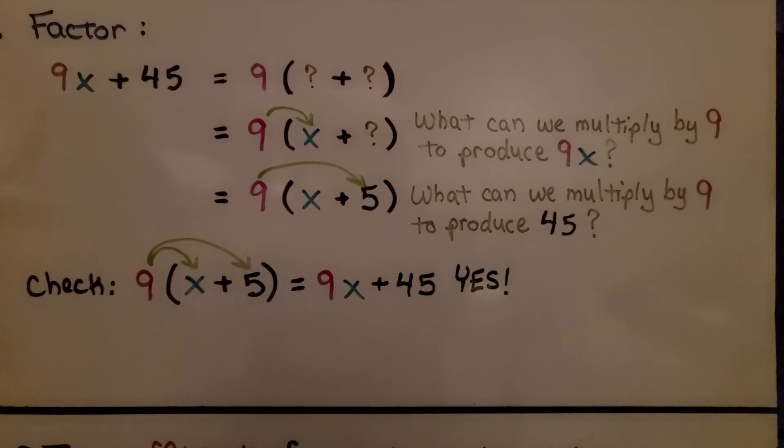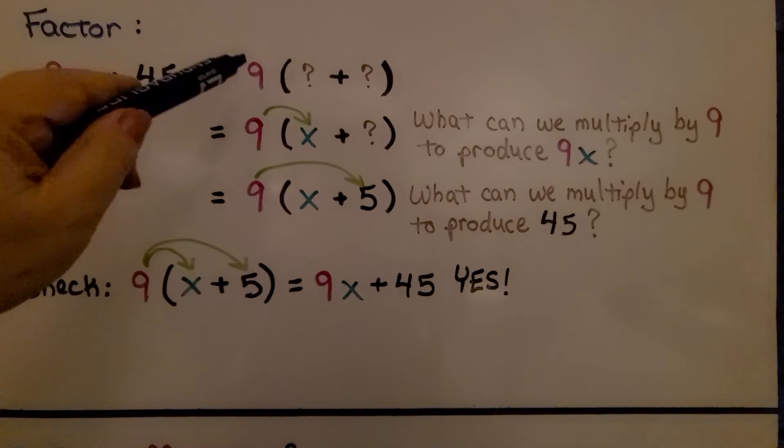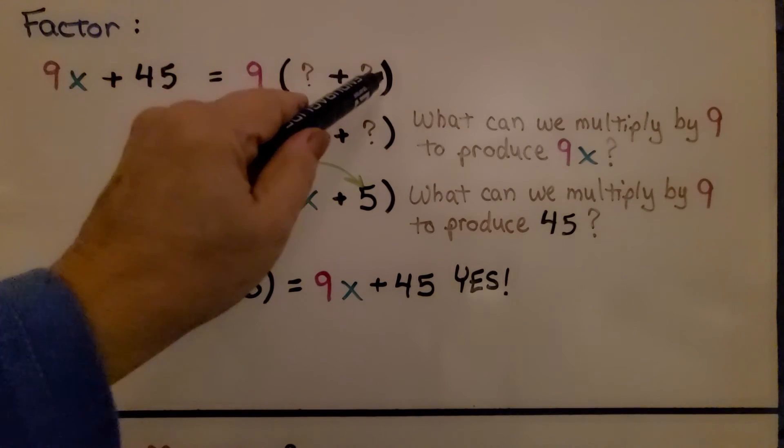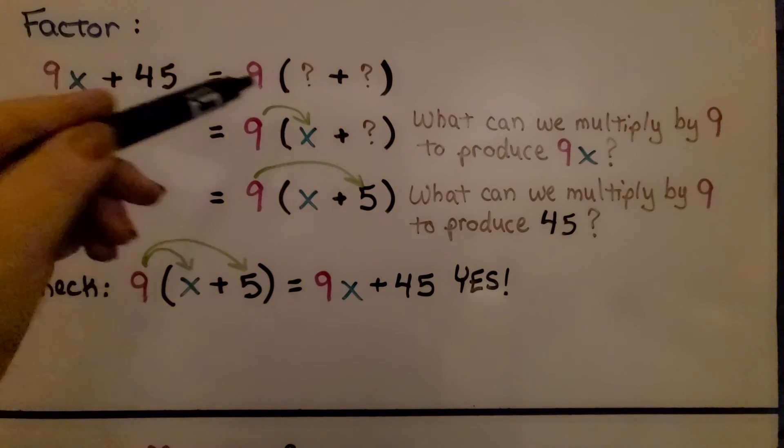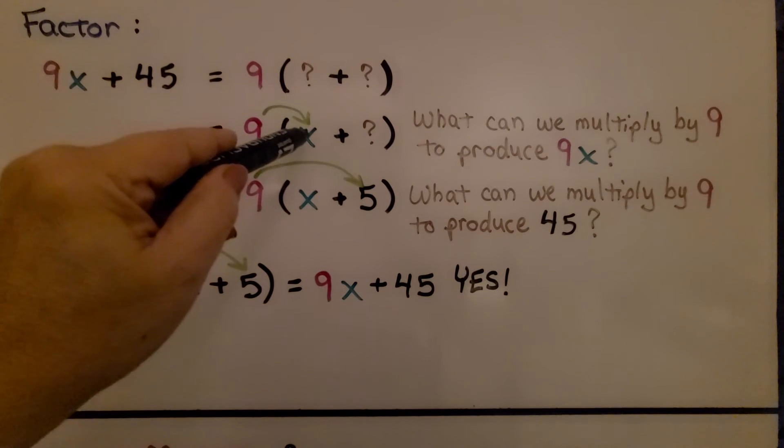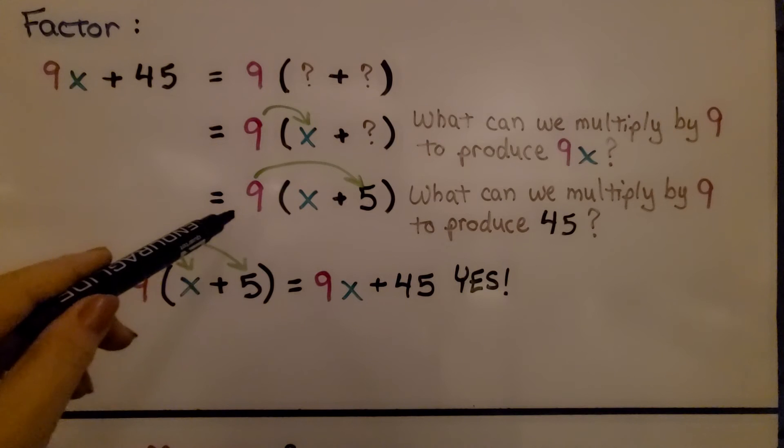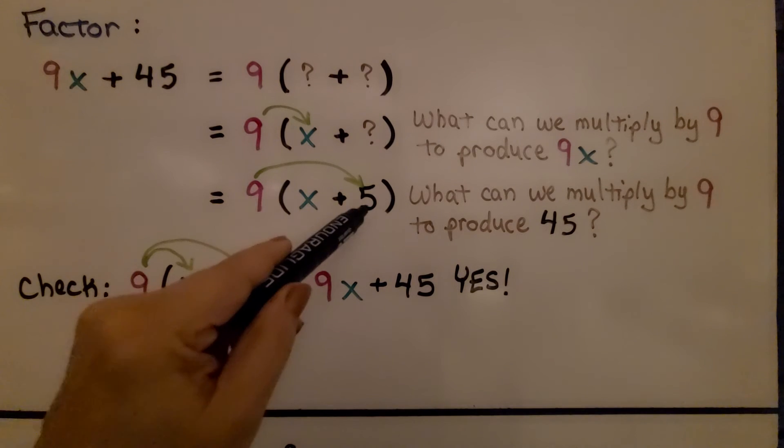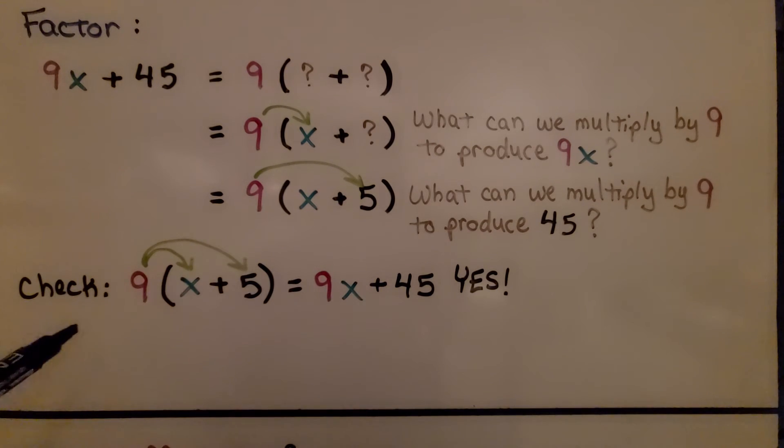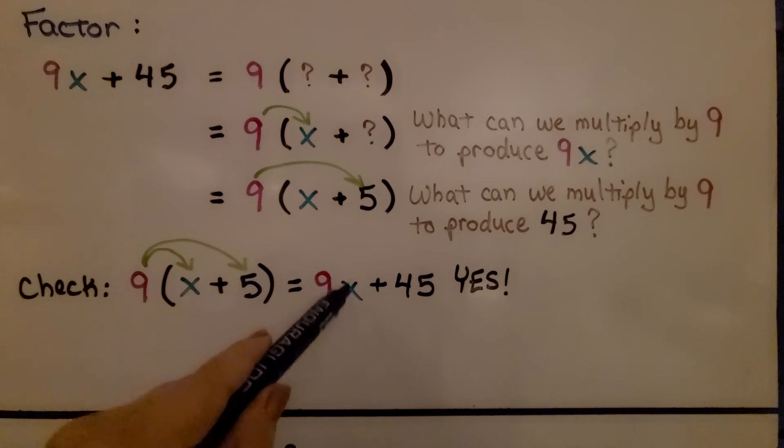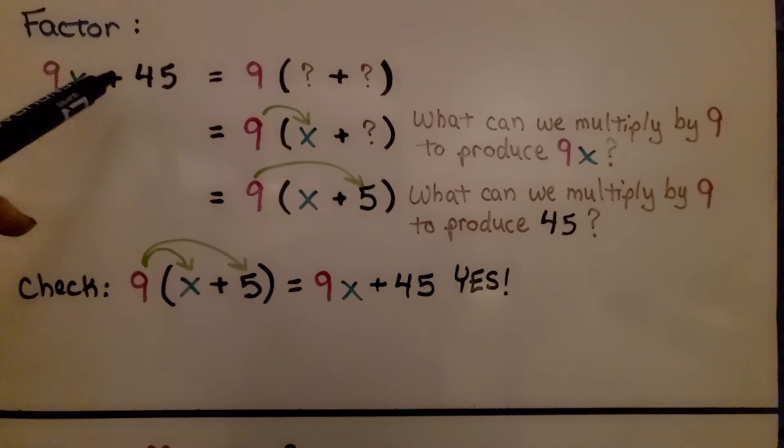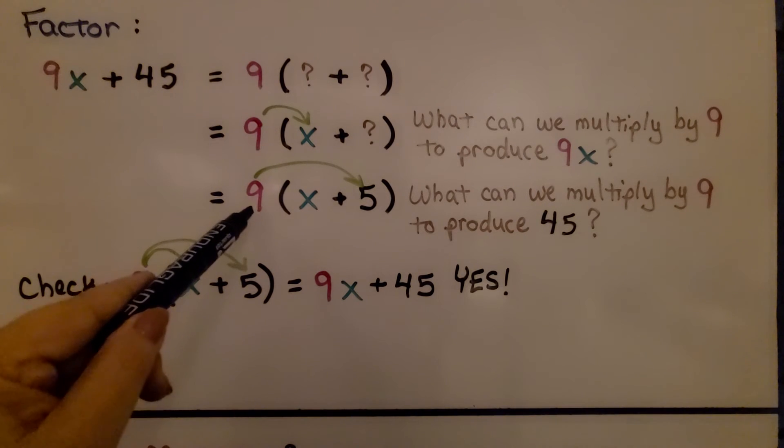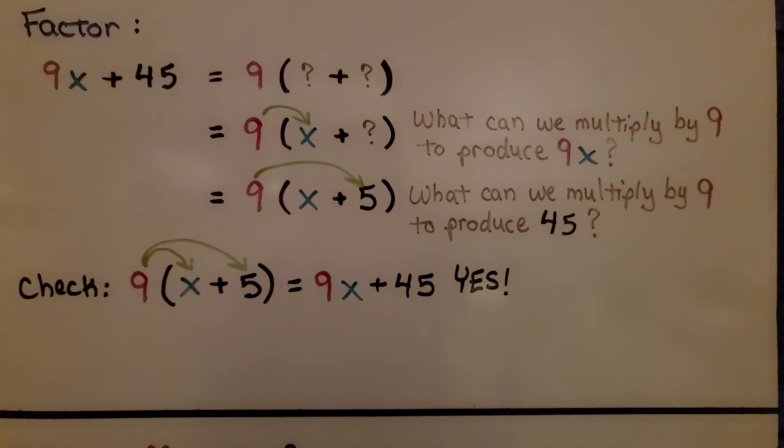Let's try another one. Here we have 9x plus 45. We think 9 times something plus something. What can we multiply by 9 to produce 9x? An x—so that goes inside the parentheses. What can we multiply by 9 to get 45? That would be 5. We check: 9 times x is 9x, plus 9 times 5 is 45. Yes, we did it correctly. To factor 9x plus 45, we get 9 outside the parentheses and x plus 5 within the parentheses.